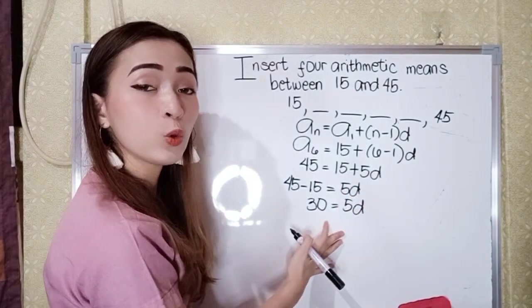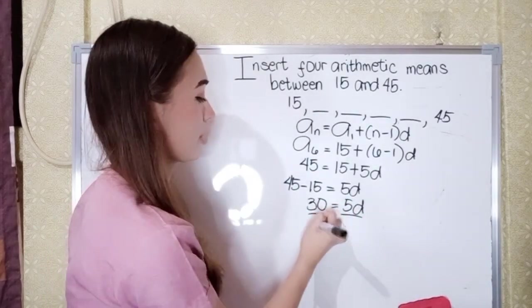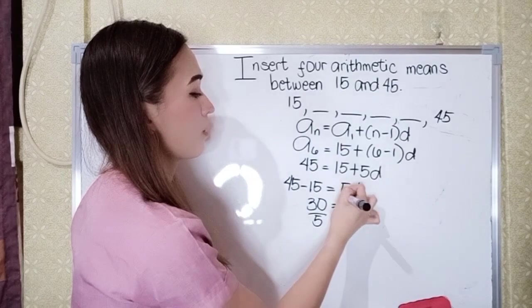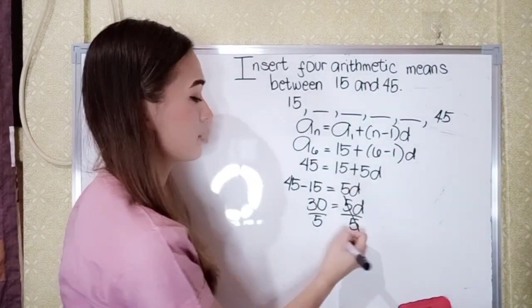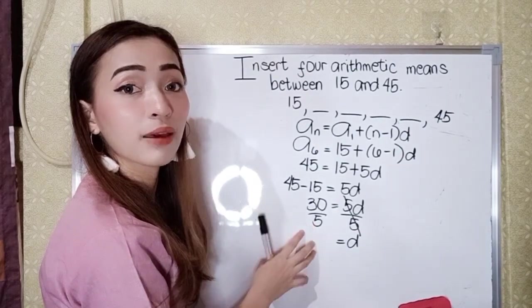To get D, we need to divide both sides by 5. So 5 divided by 5 is cancelled, so that would be D. 30 divided by 5 is 6. So our distance here is 6.